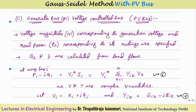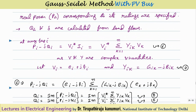Now let us discuss the PV bus in detail. For a generator bus or voltage control bus, the active power and voltage magnitude are given. The voltage depends on the field circuit (reactive power control) and the active power depends on the mechanical/governor input. That is why P and V are specified, and the remaining two parameters - the voltage angle delta and the reactive power QG - must be calculated from the load flow analysis.